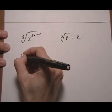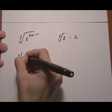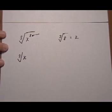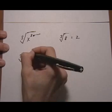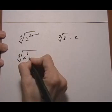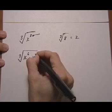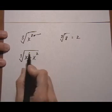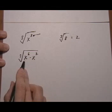So cube root of x to the 8, I would break it up and say cube root of the highest power that's divisible by 3 would be 6 without going over 8. So it's x to the 6 times, and there would be 2 left over because 6 plus 2 gives us 8.